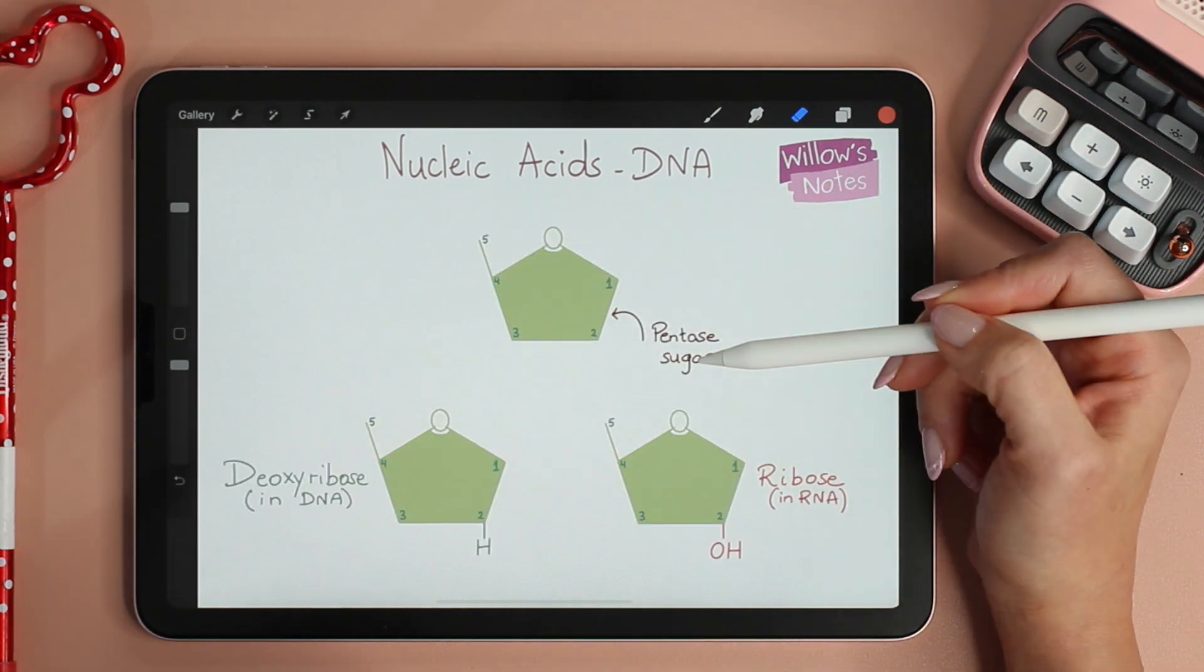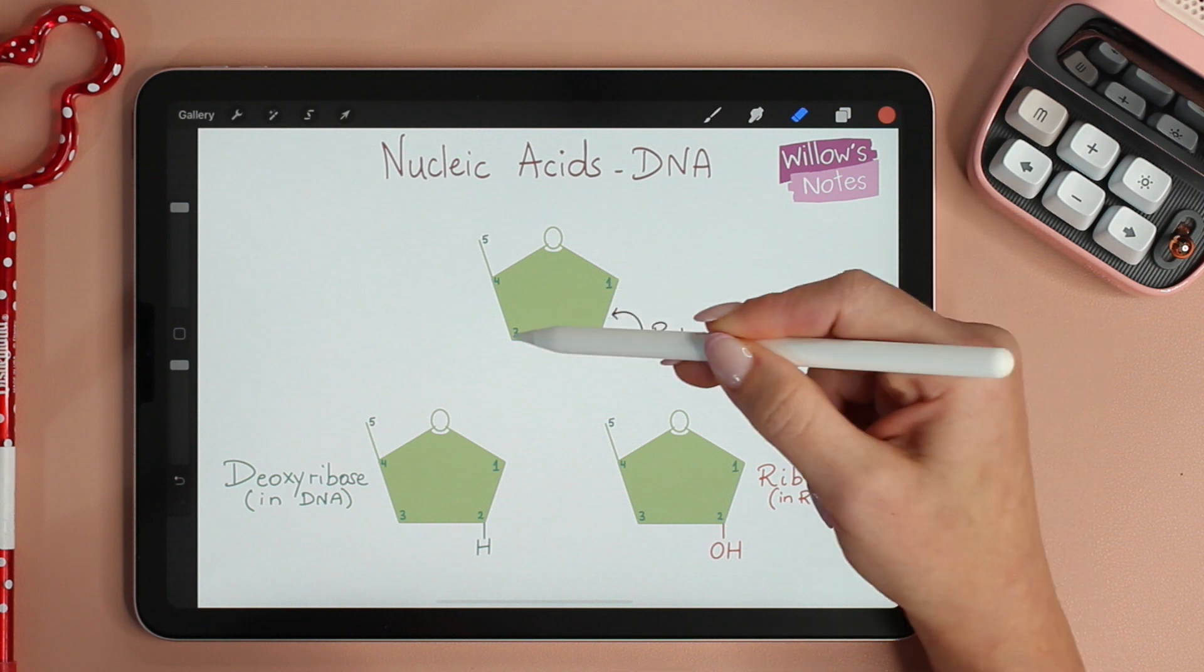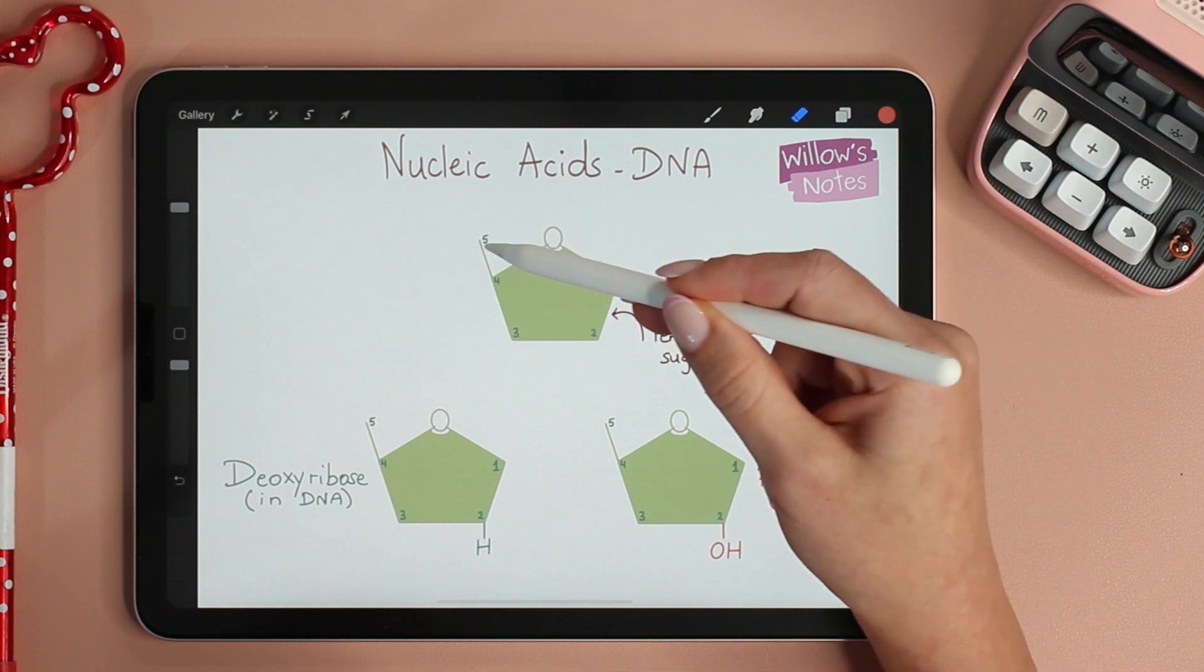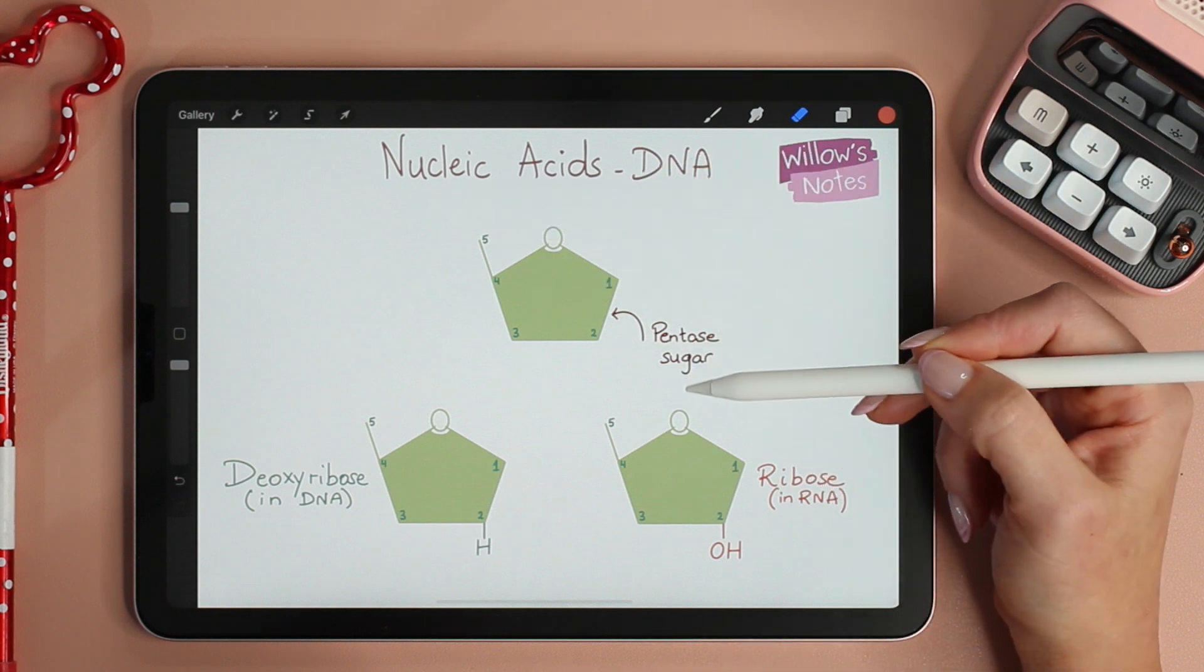In the pentose sugar, the carbons are numbered 1, 2, 3, 4, with carbon number 5 being outside the ring.